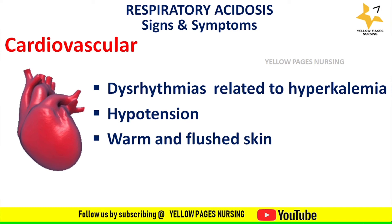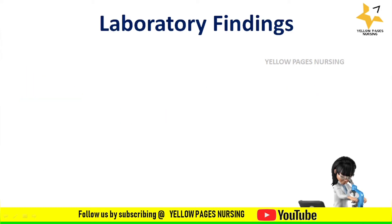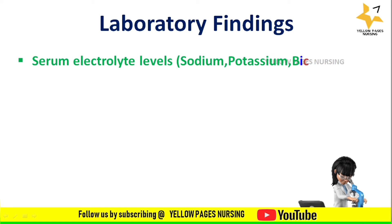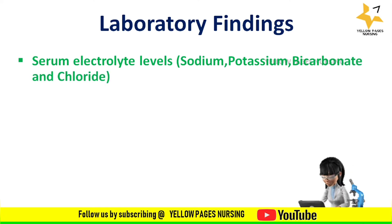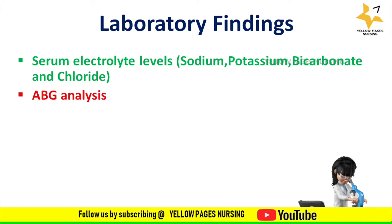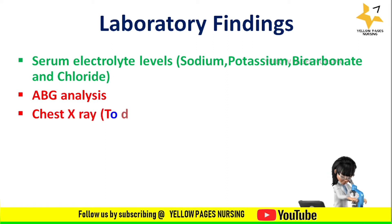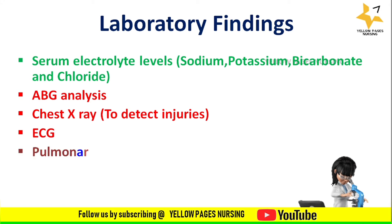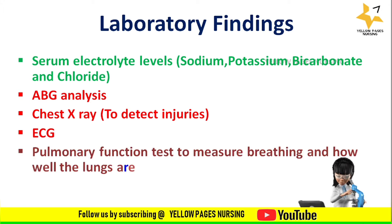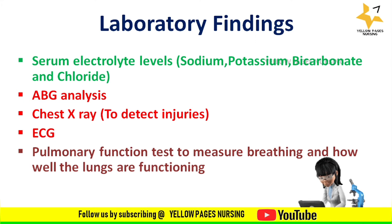Laboratory findings of respiratory acidosis include changes in serum electrolyte levels — sodium, potassium, bicarbonate, and chloride — where one or more electrolytes will be increased or decreased in patients with acid-base disorders. Other findings include changes in ABG analysis, changes in chest X-ray to detect injuries, changes in ECG, and pulmonary function tests to measure breathing and how well the lungs are functioning.